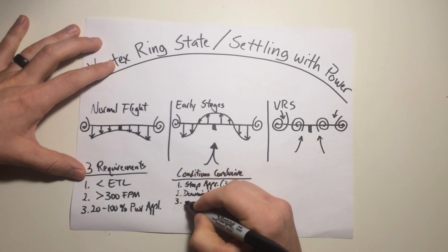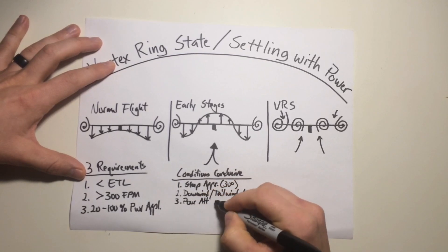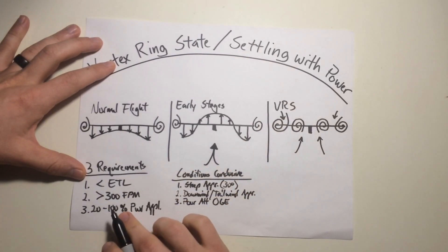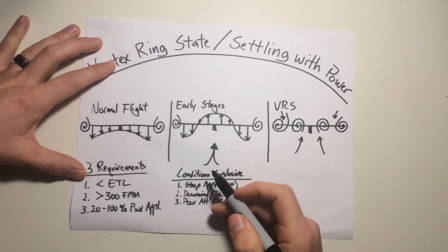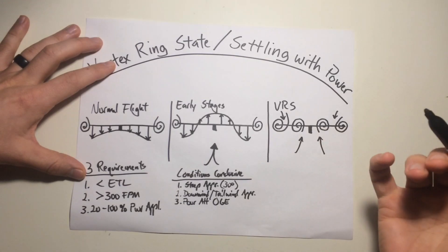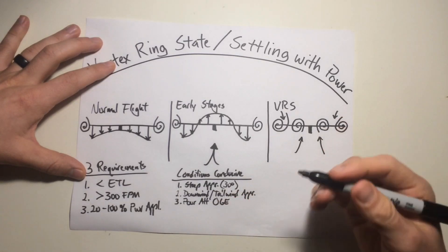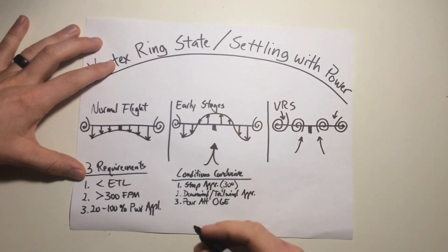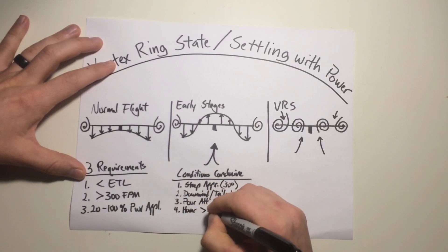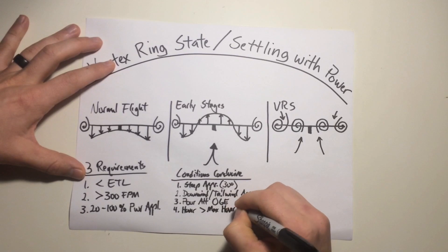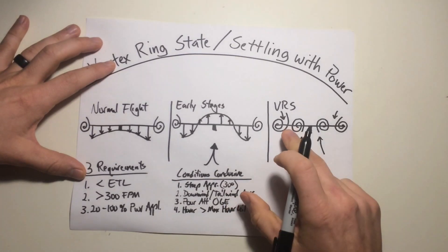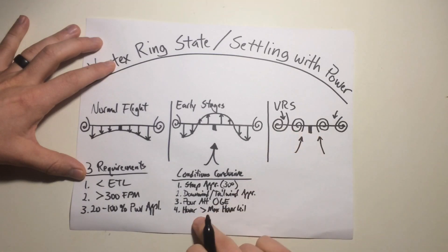Number three: poor altitude control in an OGE hover. In an OGE hover you have no airspeed but do have power applied. If you're not doing a crosscheck and you've allowed a rate of descent to build — say 500 feet per minute — the rotor enters a vortex ring state and you begin to settle with power. Number four: hovering above your maximum hover ceiling, where you're already pulling a lot of power and generating a lot of vortices near the top of that ceiling.